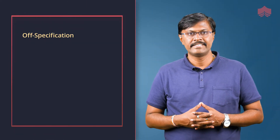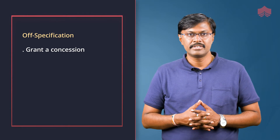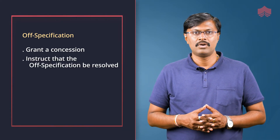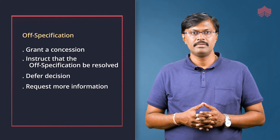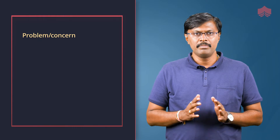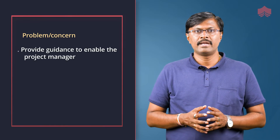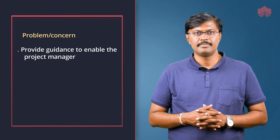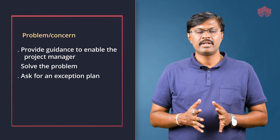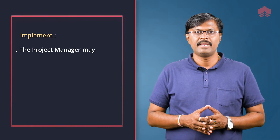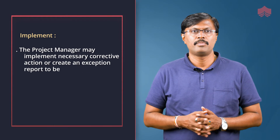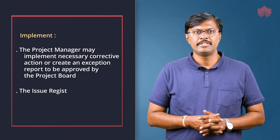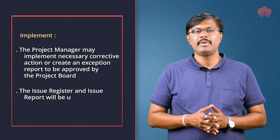For off specification, options are: grant a concession, instruct that the off specification be resolved, defer the decision, request more information, or ask for an exception plan. For problem and concern, provide guidance to enable the project manager to solve the problem or ask for an exception plan. During the implement step, the project manager may implement necessary corrective action or create an exception report to be approved by the project board. The issue register and issue report will be updated.